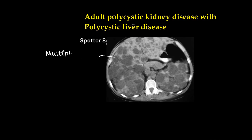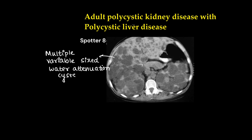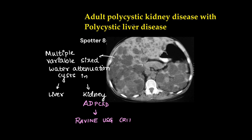This is adult polycystic kidney disease with polycystic liver disease. Multiple variable-sized water-attenuation cystic lesions are seen in the liver, which usually do not have any septations or solid component. We can also see involvement of the kidney. The diagnostic criteria for adult polycystic kidney disease is the Ravine criteria — you can read up on that.